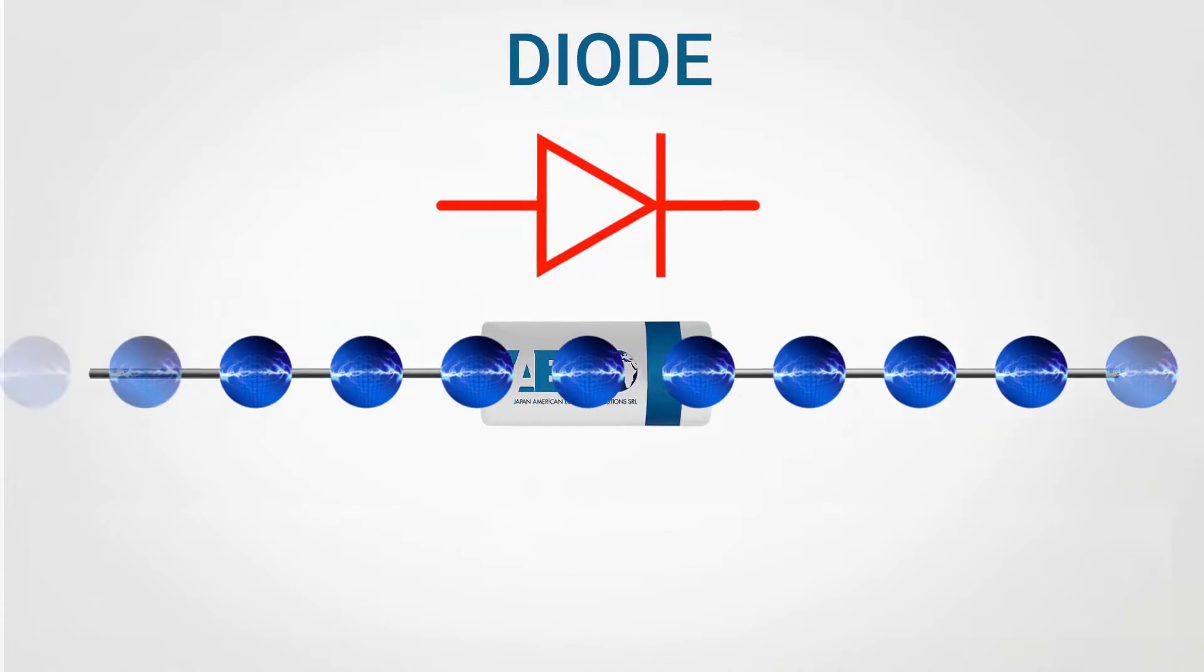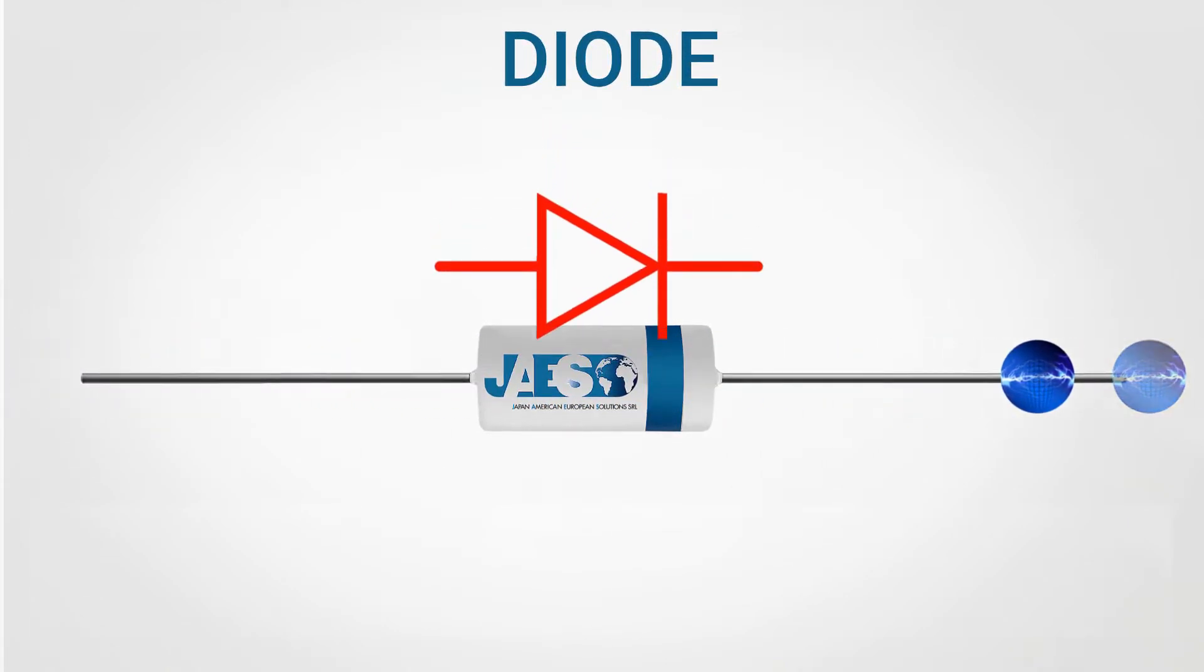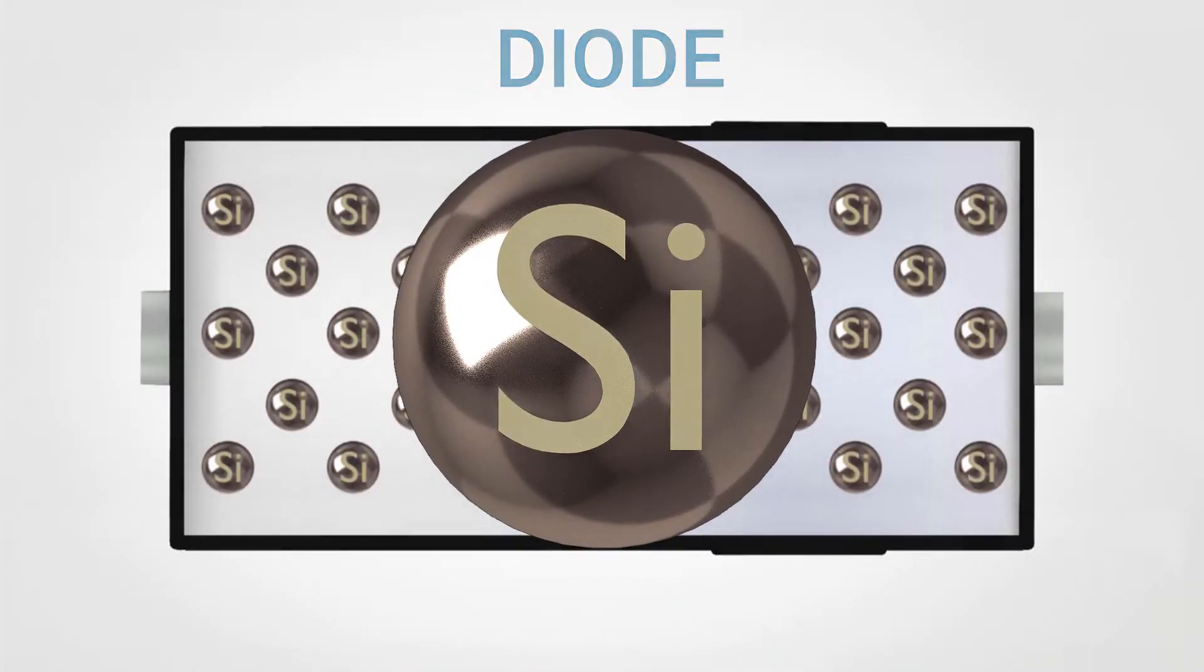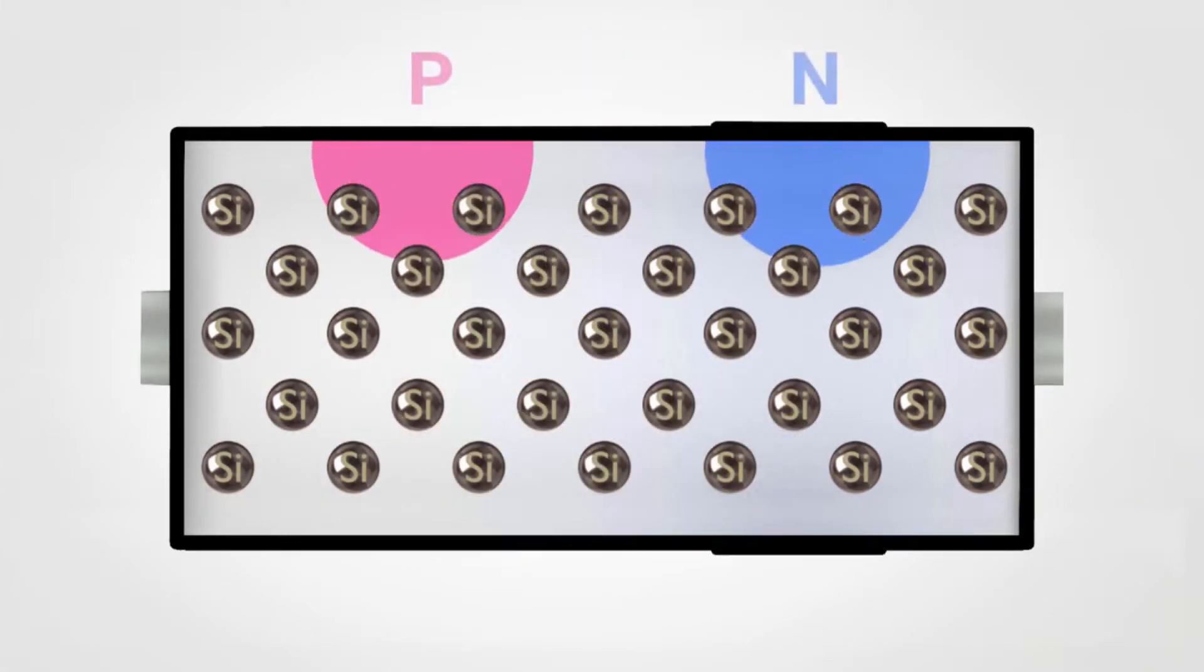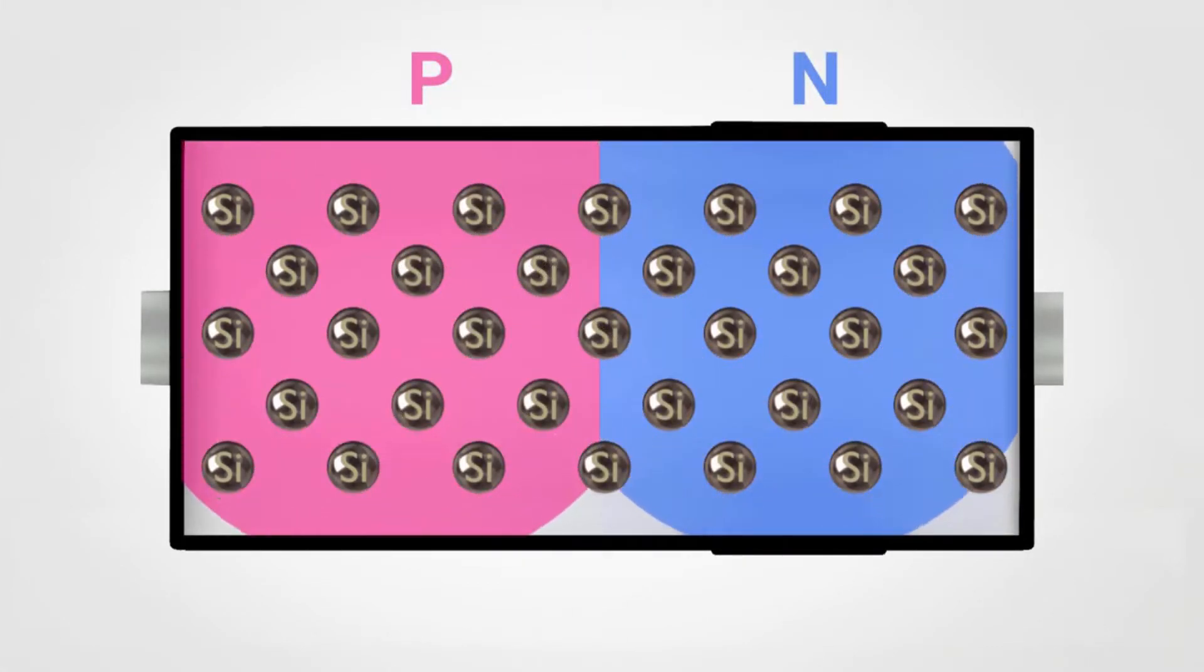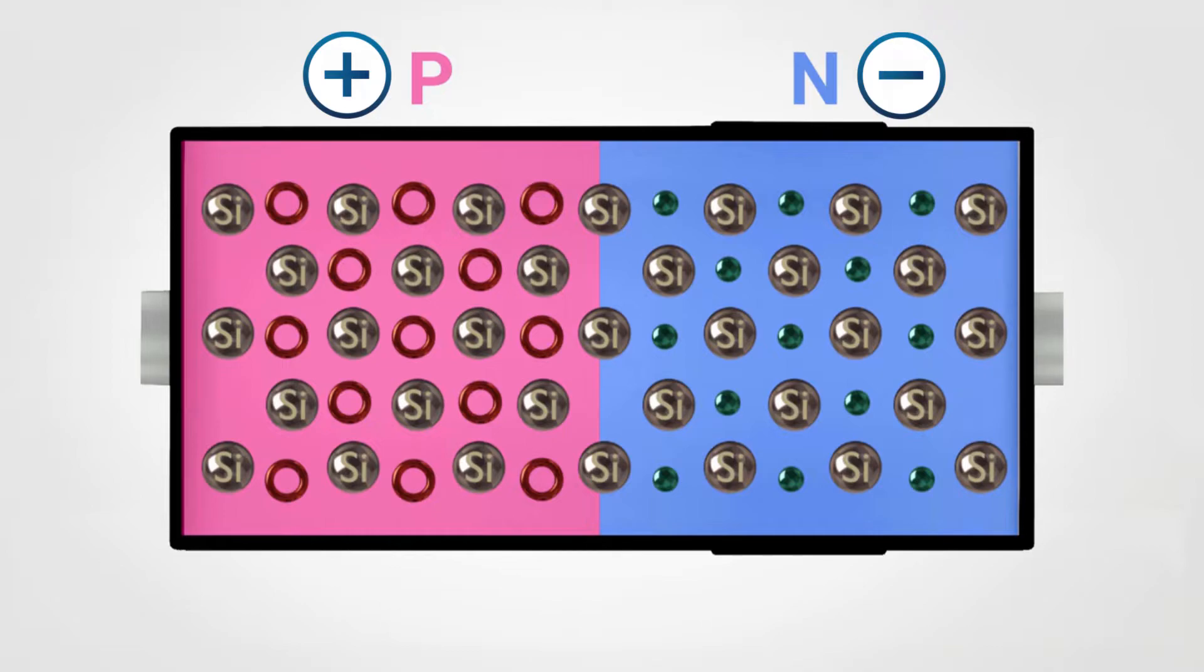In our previous video about the diode, we explained how the silicon inside is doped so as to obtain two distinct parts with two different levels of charge distribution, namely the P-N junction. The majority of electrons in one side and the majority of holes available in the other cause the natural displacement of electrons in abundance on the N-side towards the holes available on the P-side.